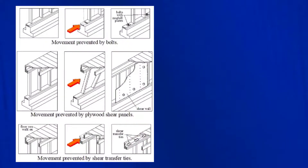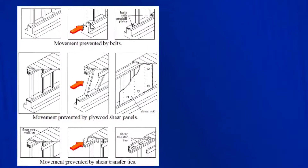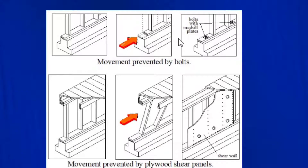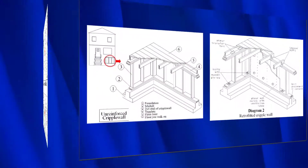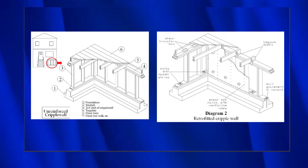Let's review everything. At the base of the cripple wall, the earthquake force tries to push the mud sill off the foundation — we have bolts to stop that from happening. The earthquake force also tries to tip the cripple wall over, and we've put plywood on it to prevent that. Finally, the earthquake force tries to slide the floor framing off the top of the cripple wall — we've installed shear transfer ties, also known as floor connectors, to prevent that. We've now done everything needed to create a shear wall out of our cripple wall.